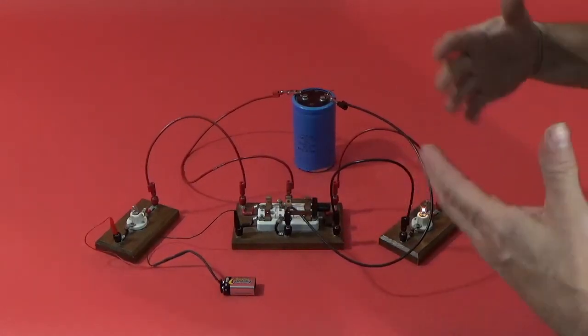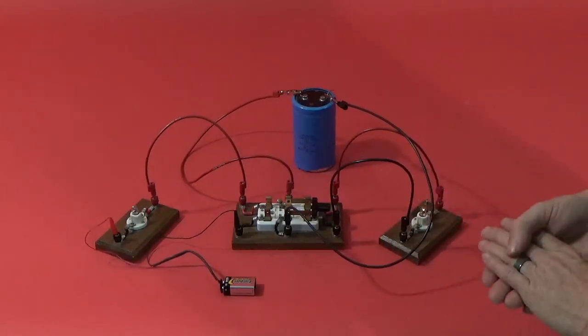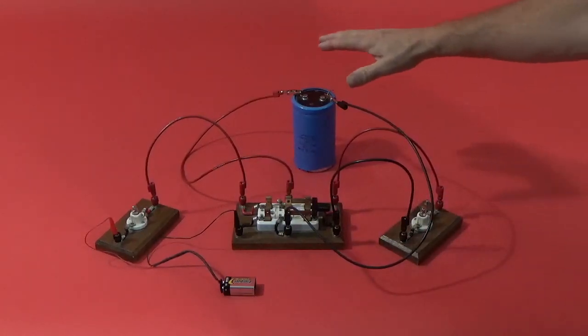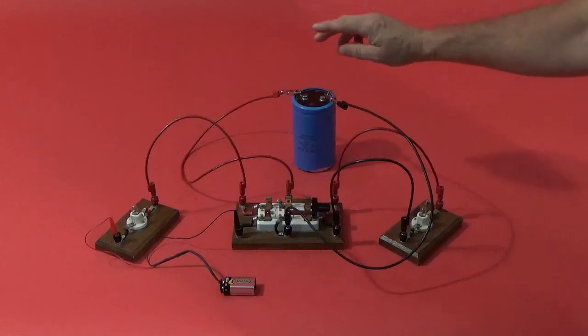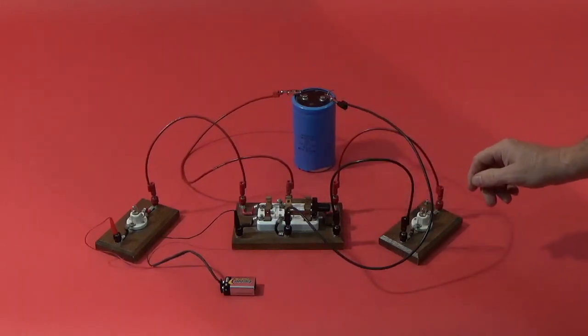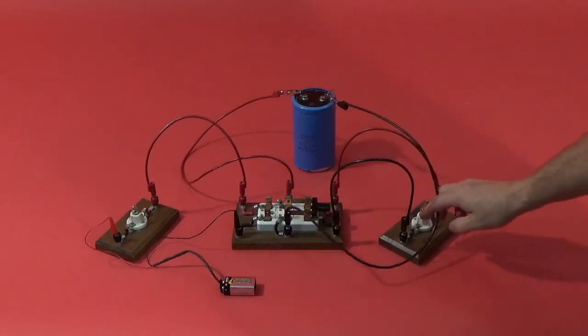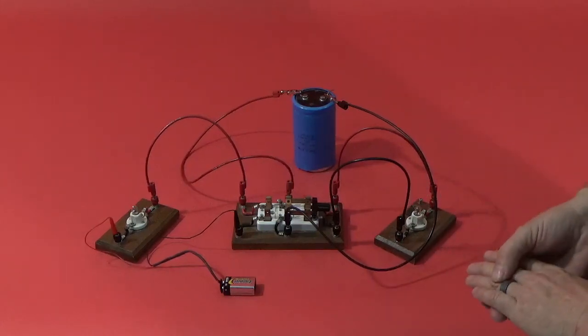So now the light bulb will light up real bright, and it'll go down. Now, the reason why it's going down is because all the charge that's in the capacitor is going all the way down to zero. And that's being dissipated through the light bulb, which is our resistor in the circuit.